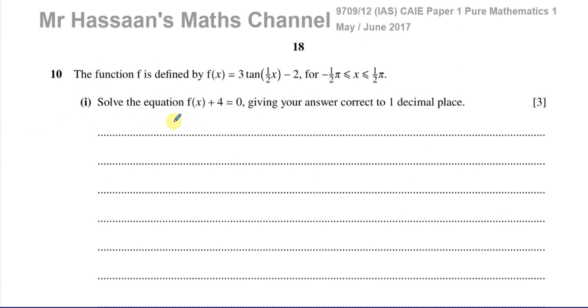First, we're going to solve this equation. The function f is defined by f(x) equals 3 tan(x/2) minus 2 for x values between negative π/2 and π/2. We've got to solve the equation f(x) + 4 = 0, giving your answer correct to one decimal place. There's a little thing to note: it says answer, which implies there's only going to be one answer, whereas normally in trig questions you get multiple answers within a range.